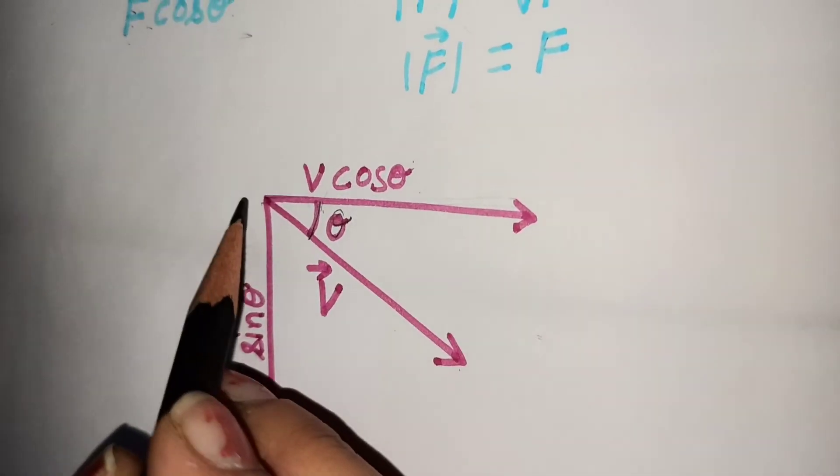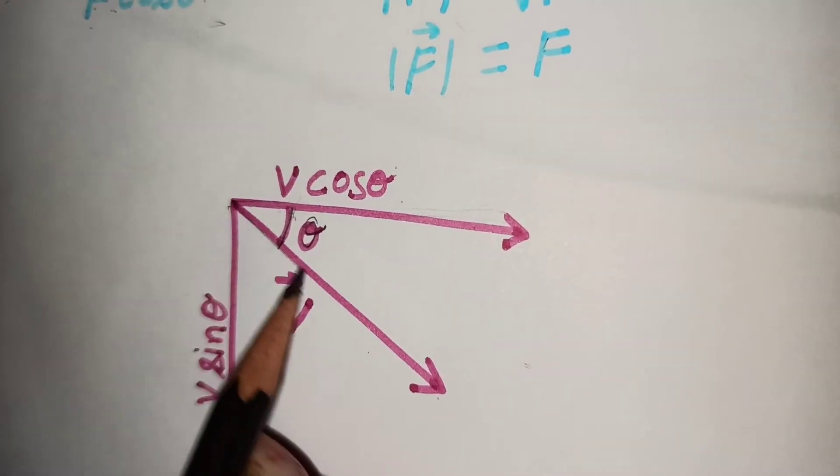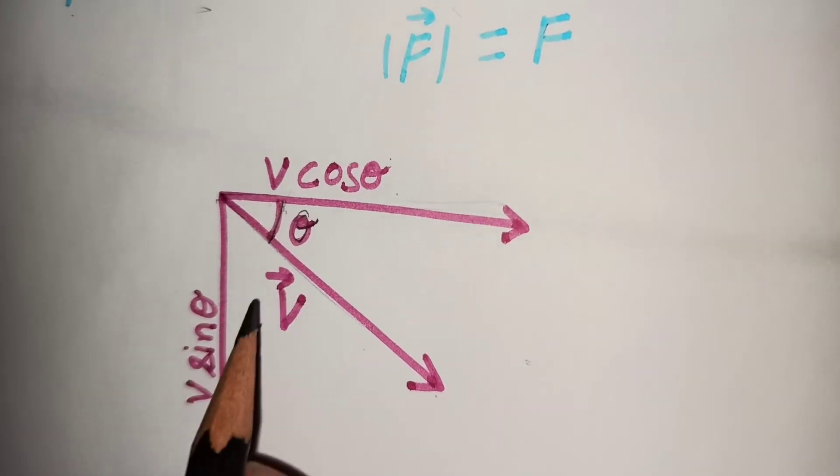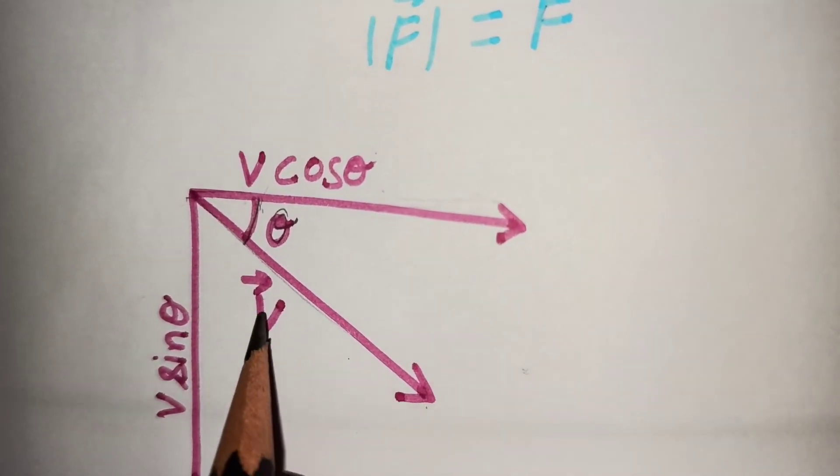Similarly, if we take any vector such as v like this, then in this case also we can break this vector into two components. One is horizontal and another is vertical.